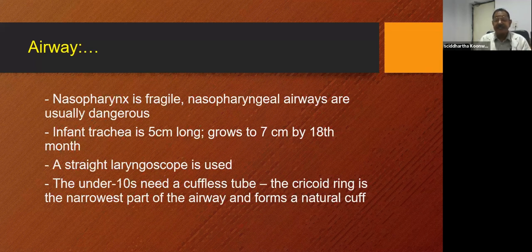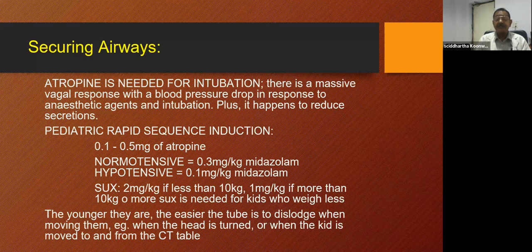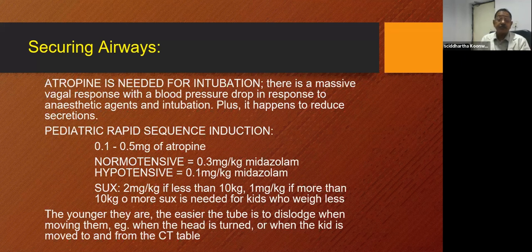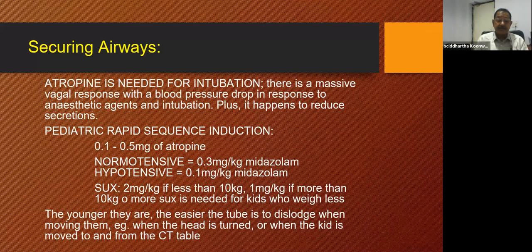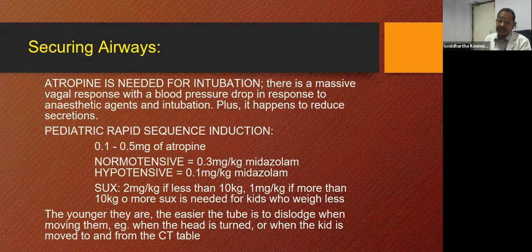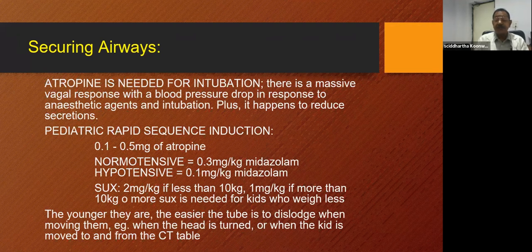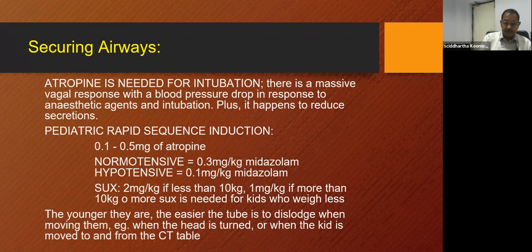When securing the airway, atropine is needed for intubation. There is a massive vagal response in children compared to adults, with a blood pressure drop in response to anesthetic agents and intubation, and atropine also reduces secretions. For pediatric rapid sequence intubation: 0.1 to 0.5 mg atropine is used. If normotensive, midazolam is used at 0.3 mg per kg; if hypotensive, midazolam at 0.1 mg per kg. Succinylcholine: 2 mg per kg if less than 10 kg, and 1 mg per kg if more than 10 kg. The younger the child, the easier the tube is to dislodge when moving them, such as when the head is turned or when the kid is moved to and from the CT table.